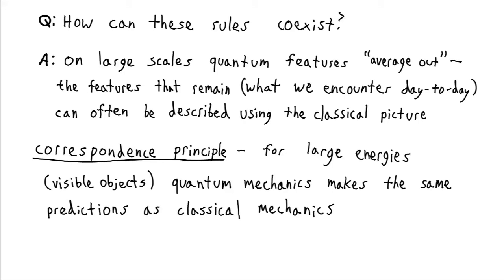So this is what's called the correspondence principle. It says that for large energies or masses, so visible objects that we're familiar with in our day-to-day experience, quantum mechanics has to make the same predictions as classical mechanics because both of these theories have to be true within their proven domains.